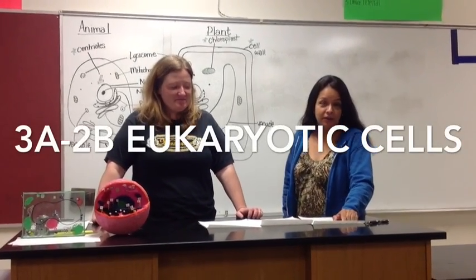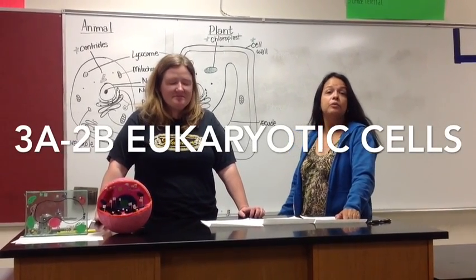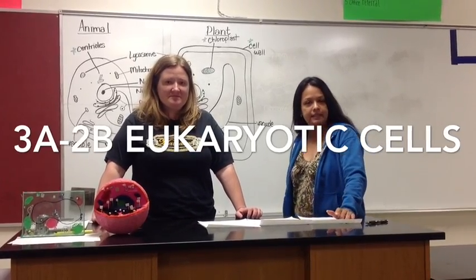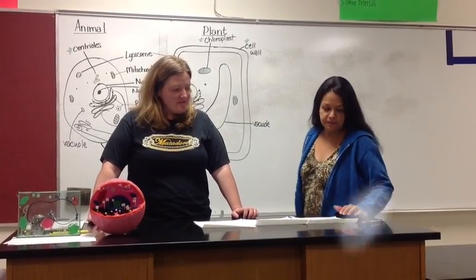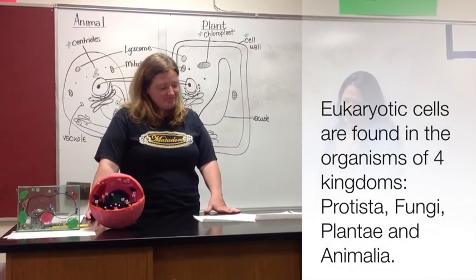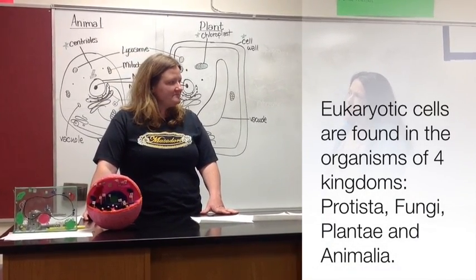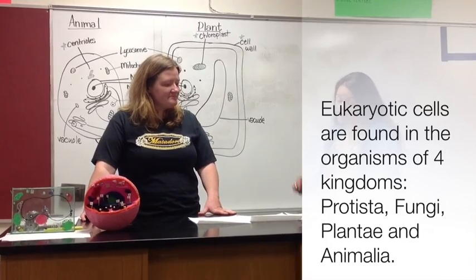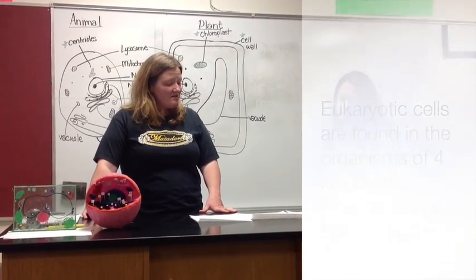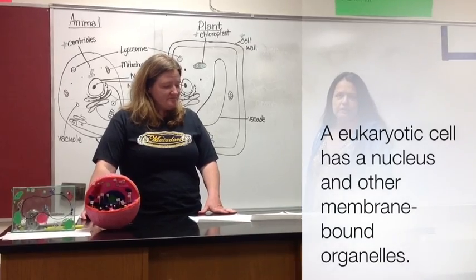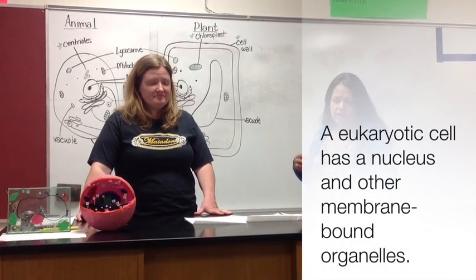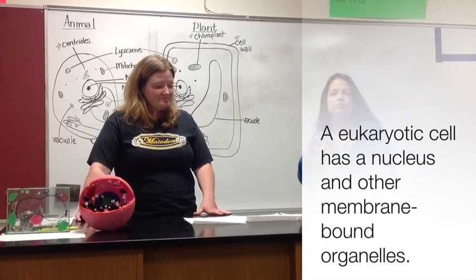Today we're talking about eukaryotic cells. That includes organisms found in kingdoms Protista, Fungi, Plantae, and Animalia. A eukaryotic cell is one that has a nucleus and other membrane-bound organelles. It describes a type of cell that has genetic material organized into a membrane-bound nucleus.